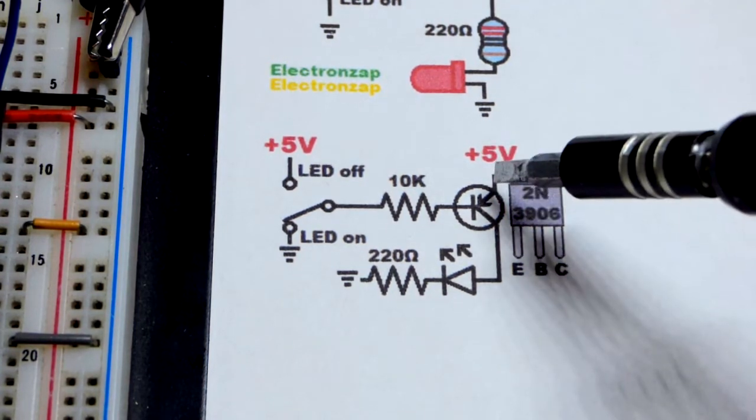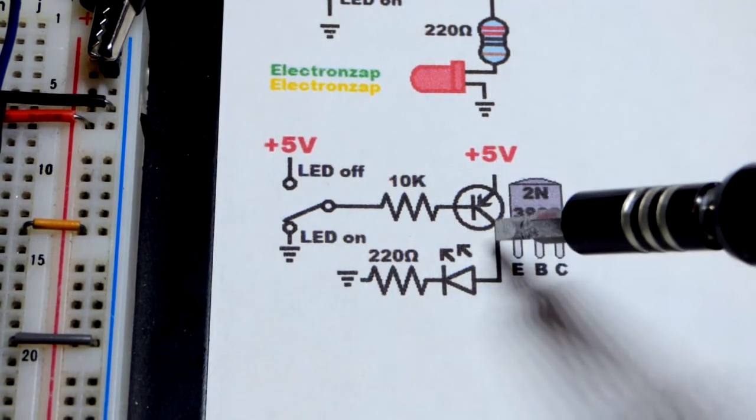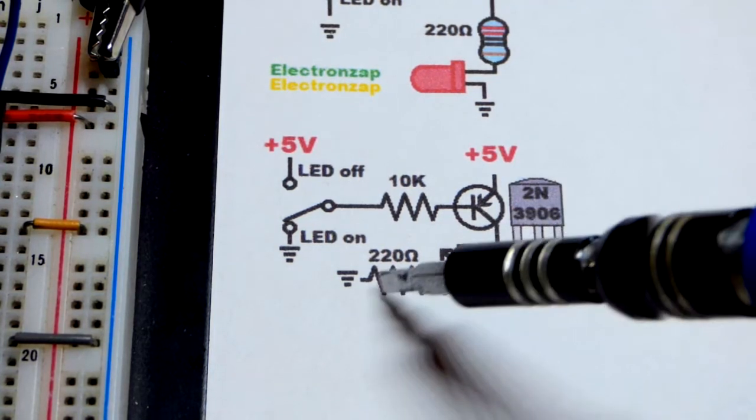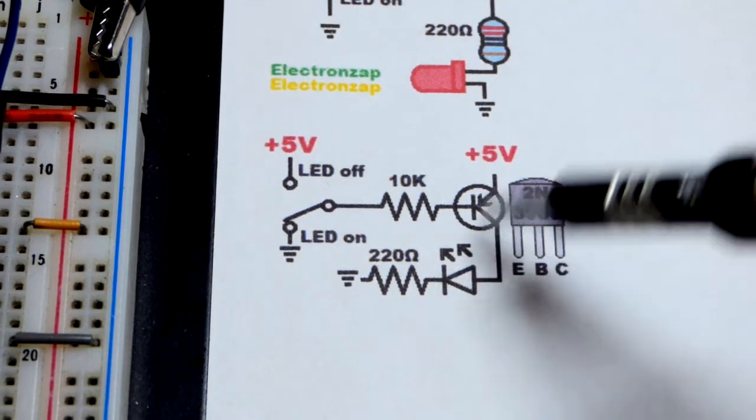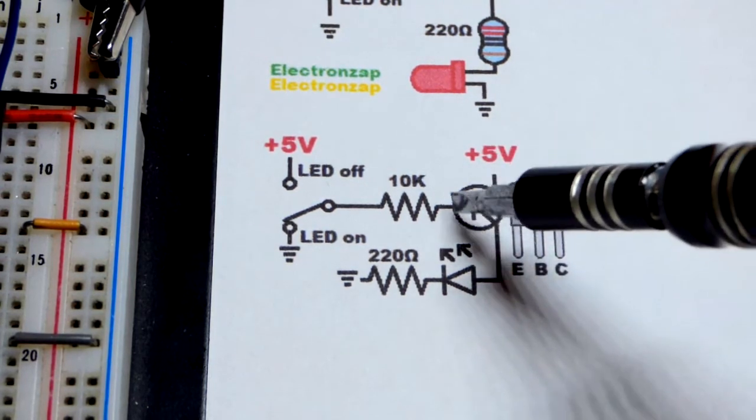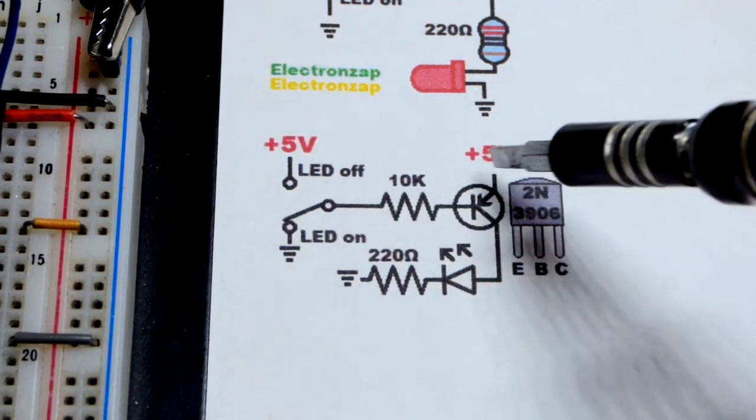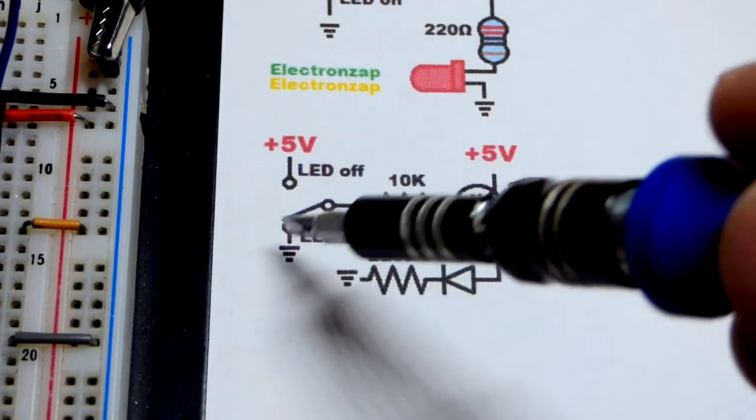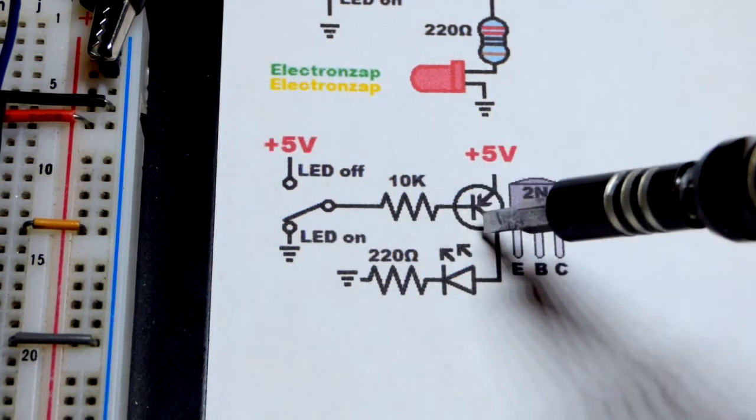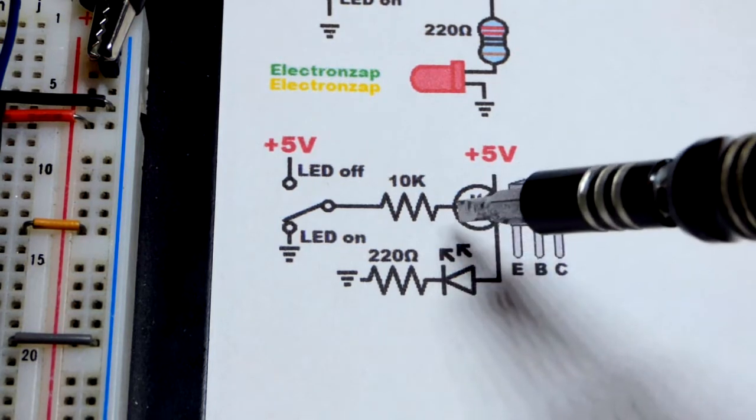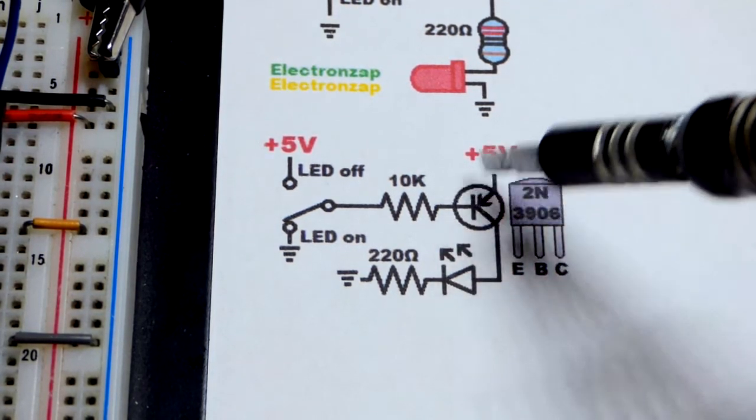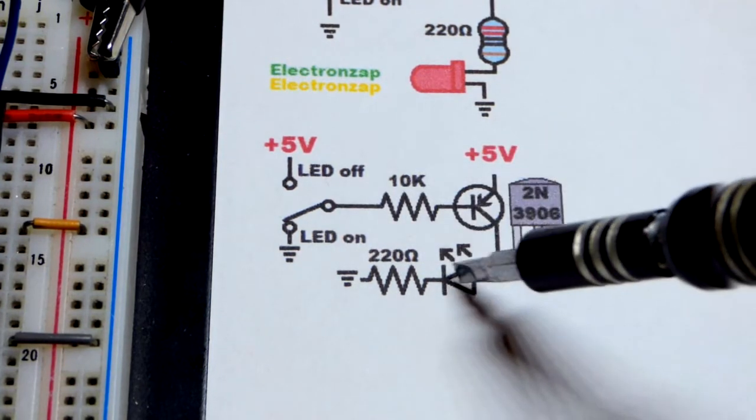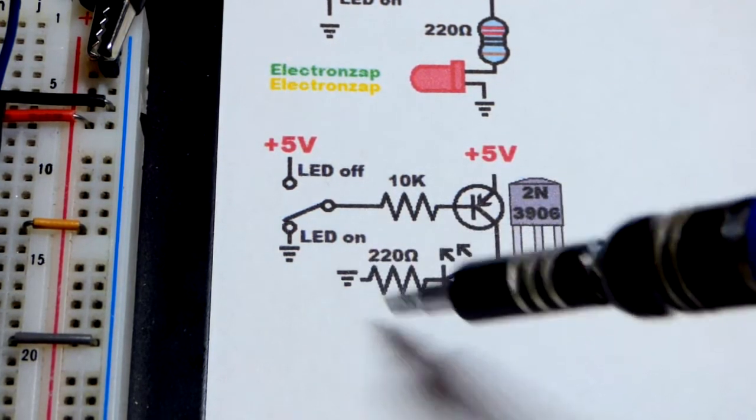Emitter directly to the positive supply because it's a PNP bipolar junction transistor. You want the load on the collector side. So that way the load doesn't interfere with the current from emitter to base. So you need that current from emitter to base a little bit to let a lot of current go from emitter to collector. So you don't want to interfere with that at all with the load for a switch circuit. So small current and then large current. We'll go through the LED and light it up.